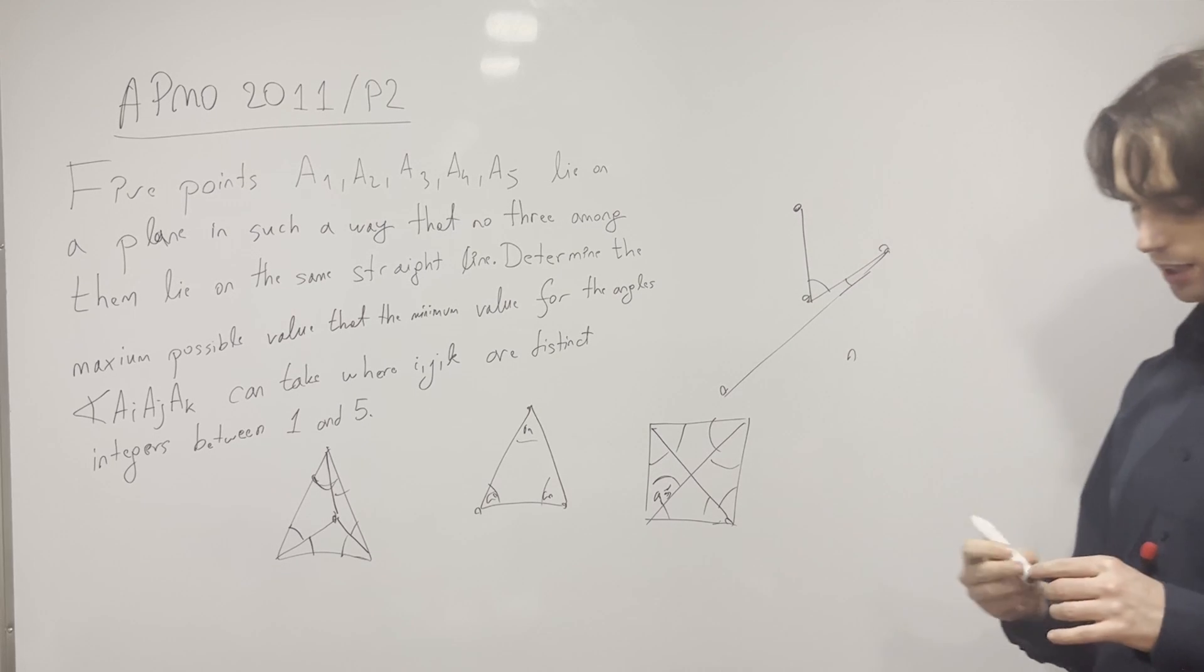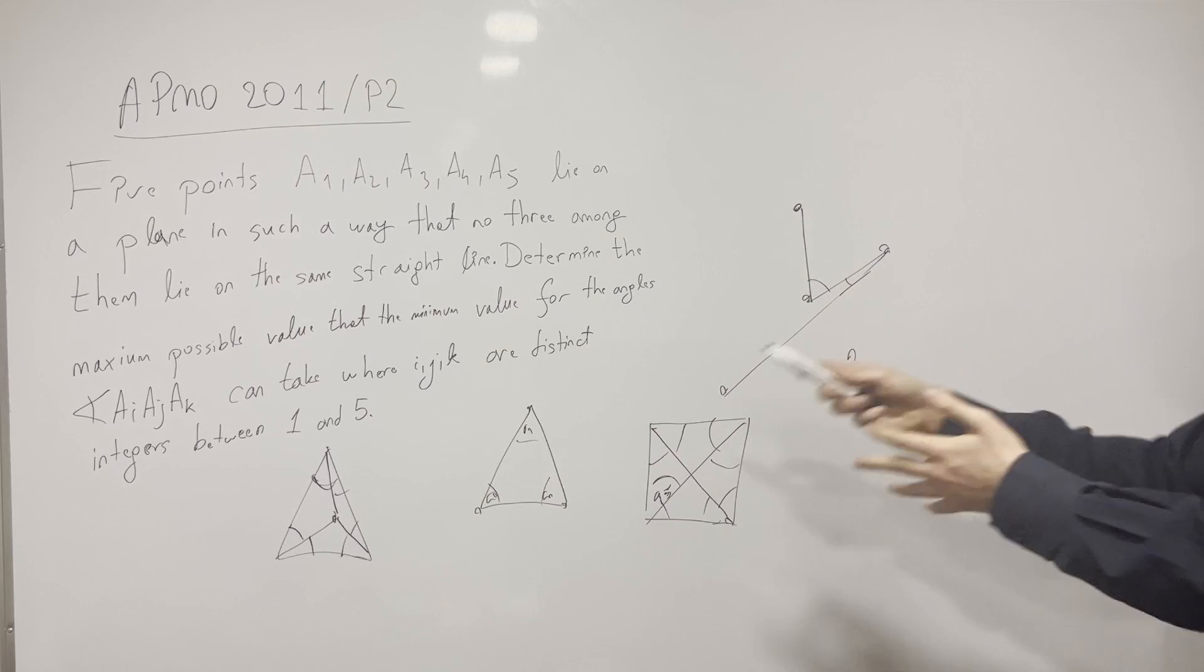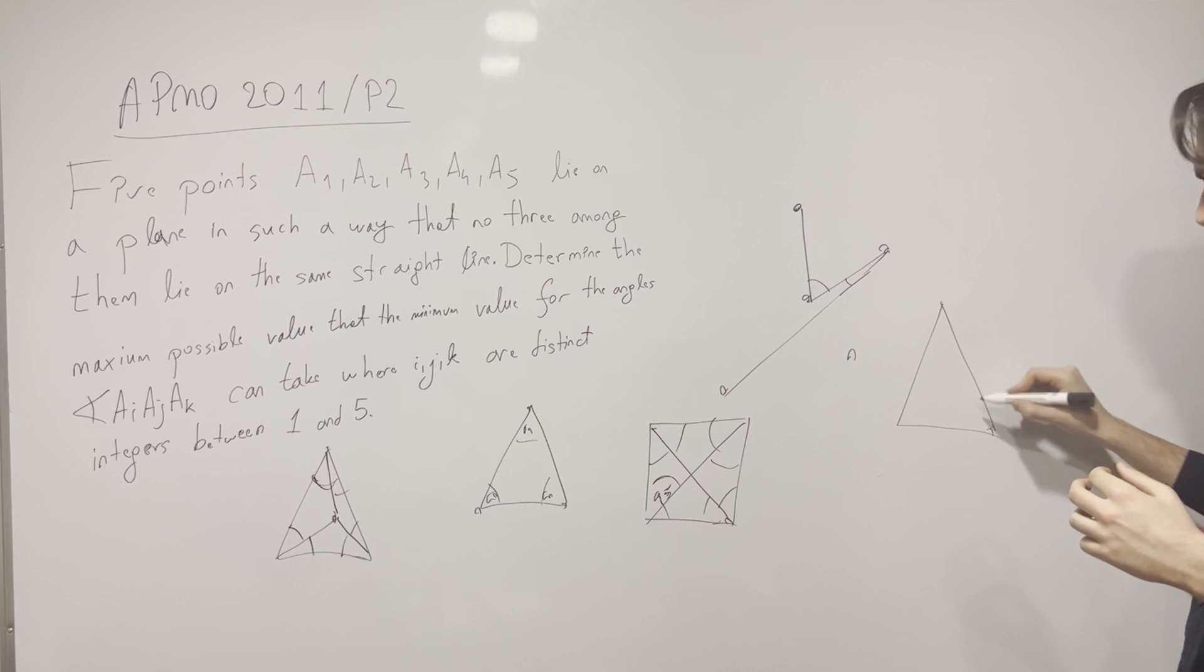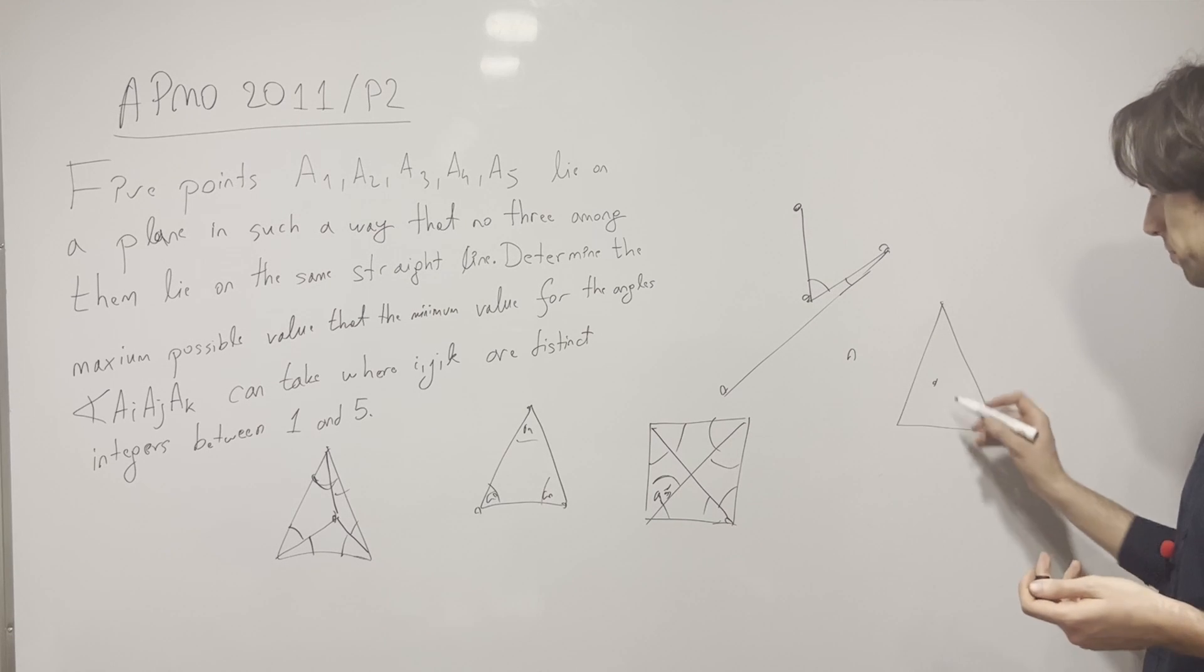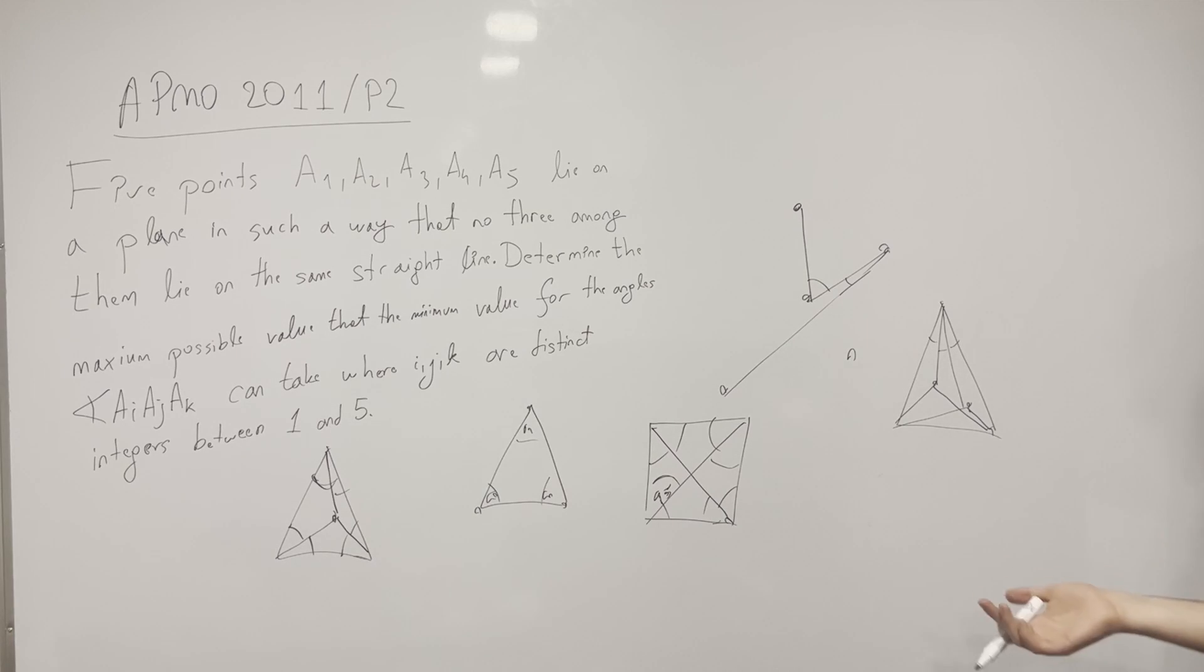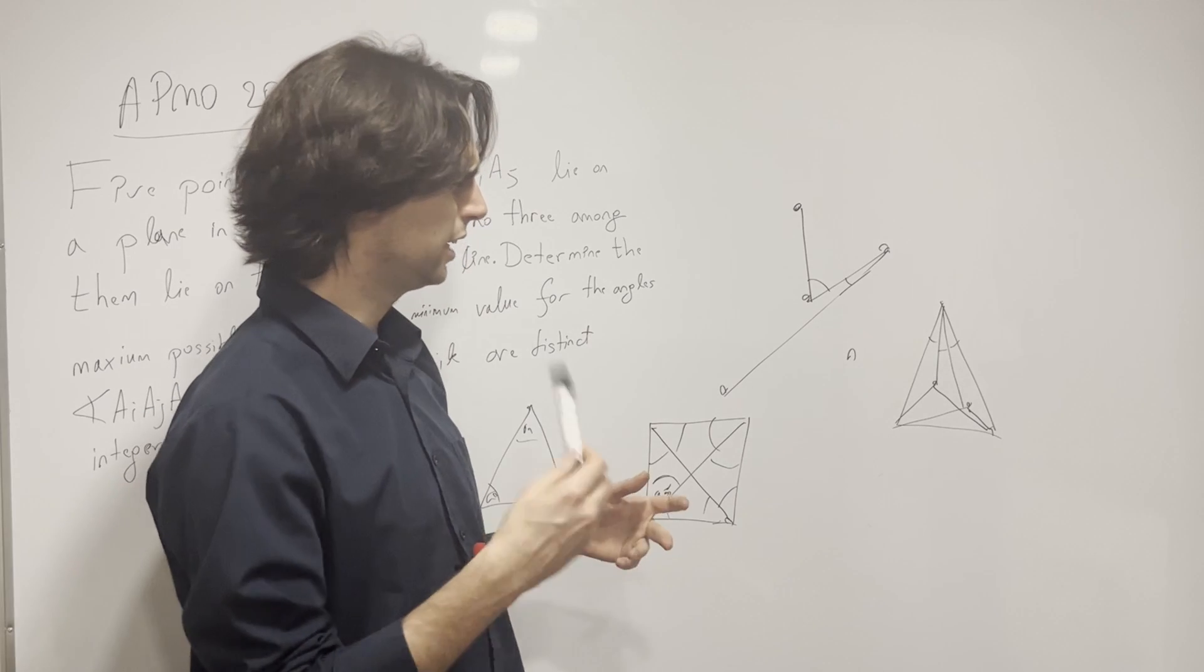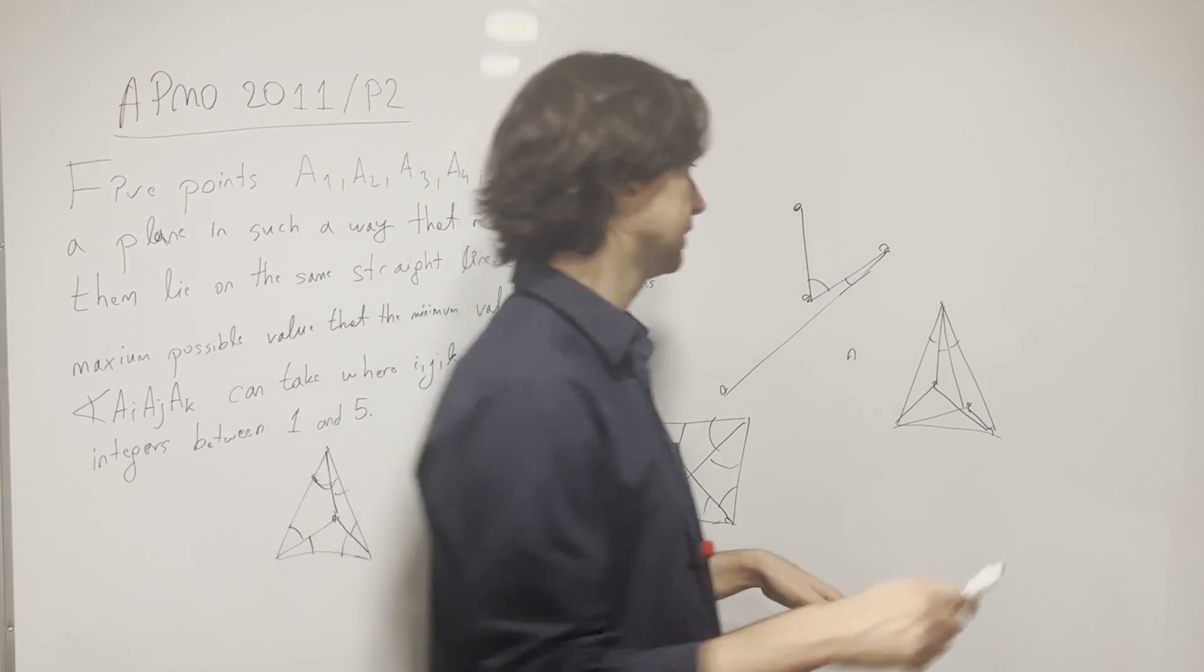And here's what we have. So this is also called, actually I'll say the name later of what this is called, but we can do the same analysis as here. We can either have a situation where we have 3 points and 2 on the inside, right? In which case we have all of these angles. We're going to have 1, 2, 3, times 3, which is 9. 9 angles. They sum up to 180. So that means that one of them is going to be at most 20.